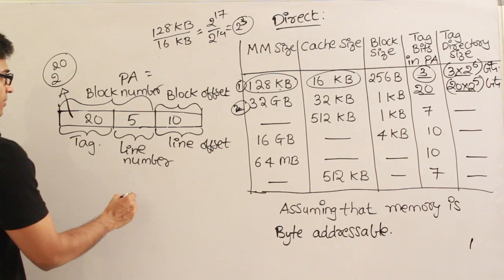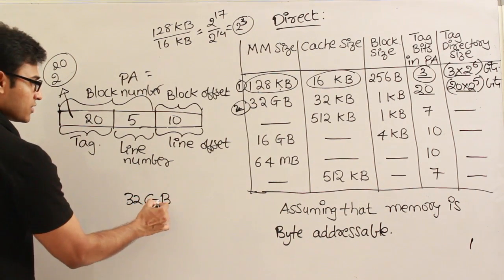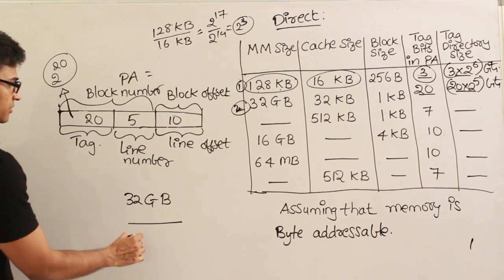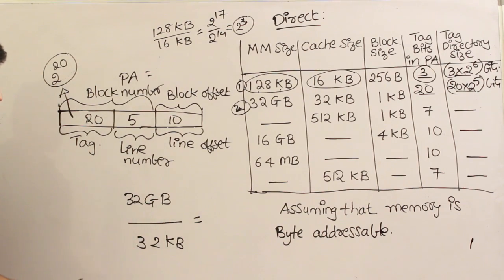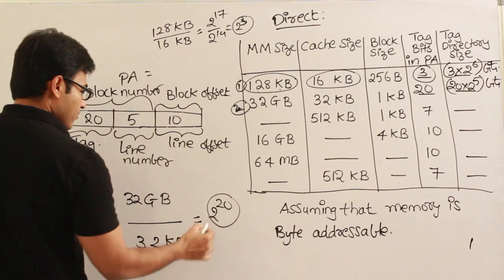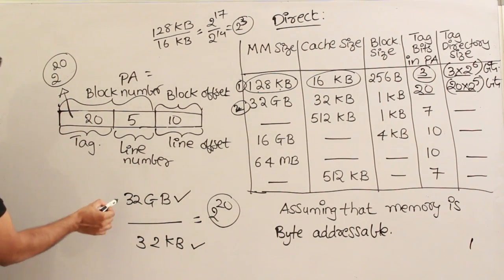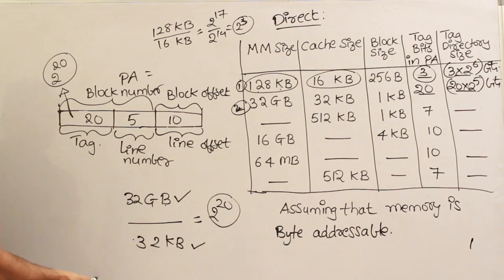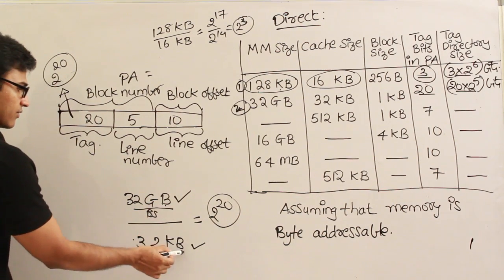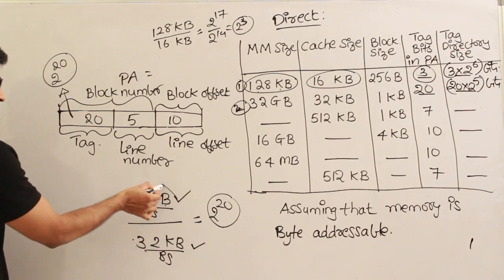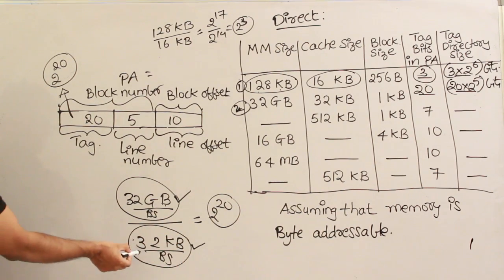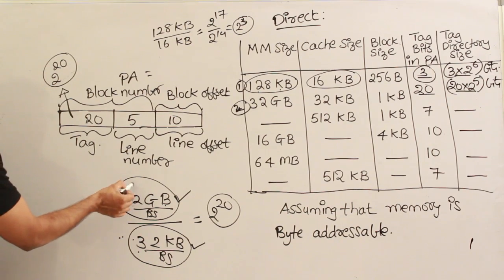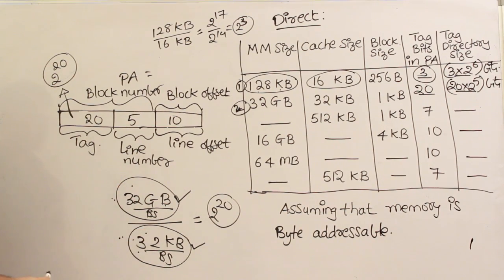Main memory is 32 GB and cache is 32 KB — the ratio is 2^20, so every one block maps to 2^20 blocks. If you divide both by the block size, you get the number of blocks in main memory and the number of lines in cache. That ratio tells you how many main memory blocks map to how many cache lines.